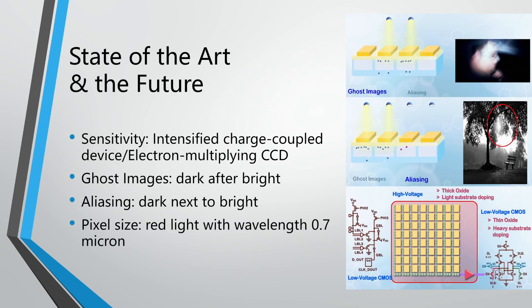Right now, there are still some limitations on CCD: minimum light intensity, on-chip signal processing, and inefficient transfer of charges. In the sensitivity area, people have proposed technologies like intensified CCD or electron-multiplying CCD — they all use the similar idea of multiplying the electron or photon before they reach the CCD device, so that even in dim environments we can still sense something. However, ghost image and aliasing are still very troublesome. Ghost image is a dark artifact after a bright object, and aliasing is a dark artifact next to a bright object, as seen on the right. They are both formed because of extra hole and electron generation outside of the quantum well, causing carriers to wander and move into the quantum well of a dark region.